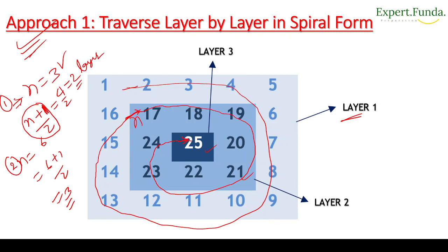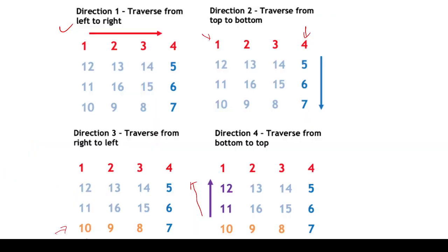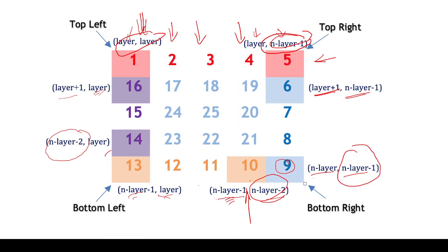For each layer, we traverse four directions. Direction 1: left to right. Direction 2: top to bottom. Direction 3: right to left. Direction 4: bottom to top. As you can see, layer 1 goes around the outside, then layer 2 is inside, and each layer boundary is defined by the variable 'layer' and 'n minus layer minus 1'.